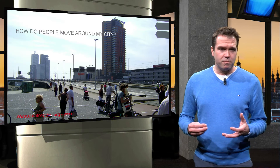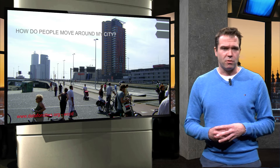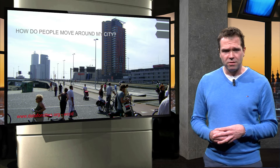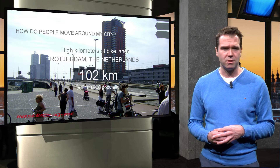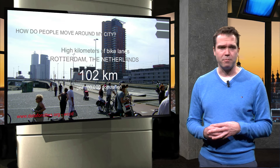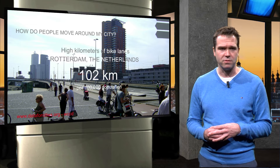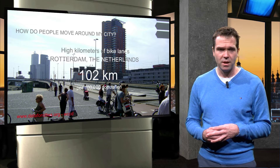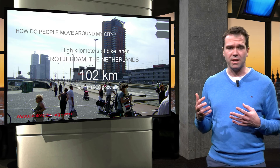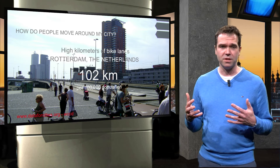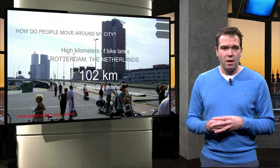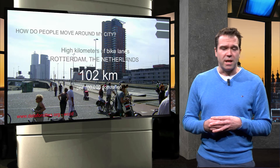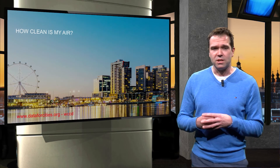How do people move around in my city is another question. The city of Rotterdam has the highest number of bicycle paths per capita — over 100 km per 100,000 citizens. An interesting question is: what can you learn from these cities, from their city planning? How clean is my air is another interesting question.